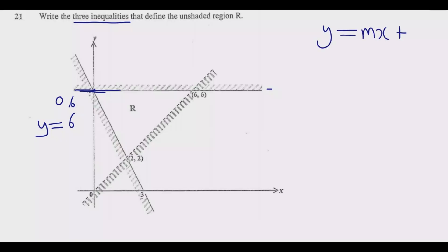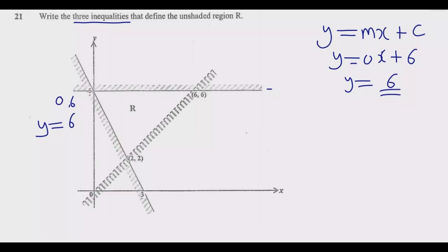Because it's a horizontal line, the gradient is equal to zero, meaning y = mx + c becomes y = 0·x + 6, so y = 6. That's the straight line. Now we need to use an inequality to identify the region we want. We're interested in the region below this line, so y is less than 6. Because this region includes the line itself, we say y is less than or equal to 6.